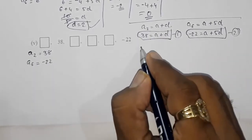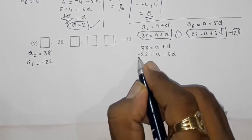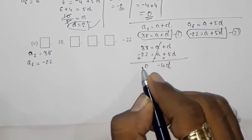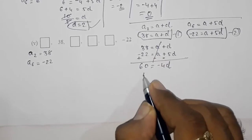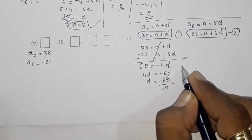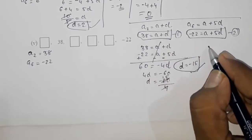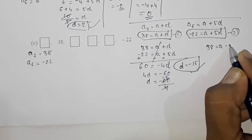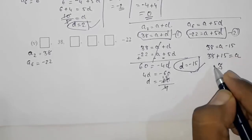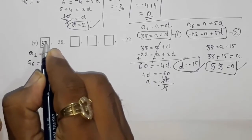Solving by elimination — subtract equation 1 from equation 2: the 'a' terms cancel, giving −4d = −60, so d = −60/4 = −15. The common difference is −15. Substituting into equation 1: 38 = a + (−15), so a = 38 + 15 = 53. The first term is 53.